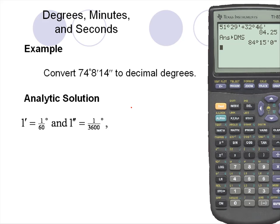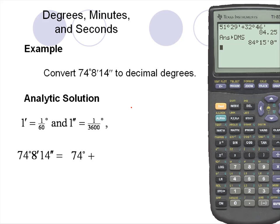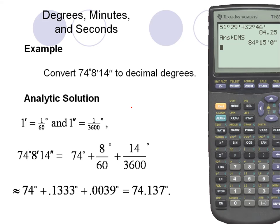Remember our conversions: one minute is 1/60th of a degree, and one second is 1/3600th of a degree. So converting this to a decimal degree, 74 is our whole number — we'll keep 74 degrees as the whole number. We'll take our minutes and divide by 60, and take our seconds and divide by 3600, for a decimal degree of 74.137 degrees.